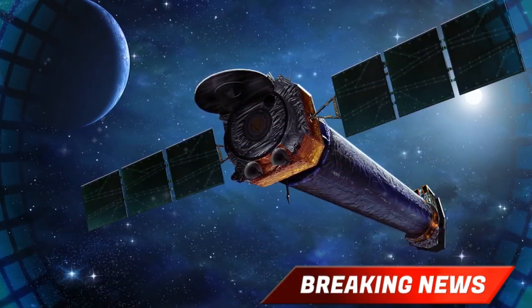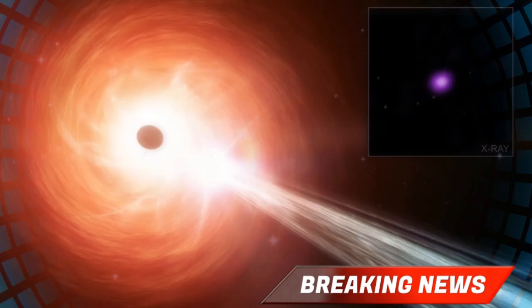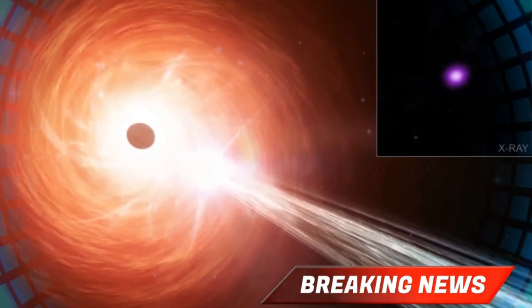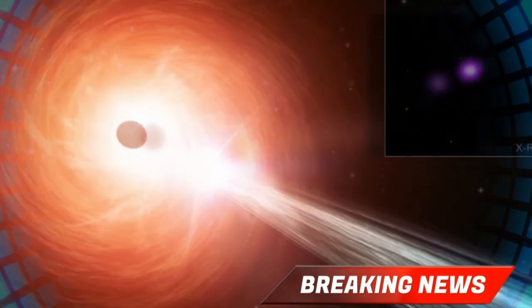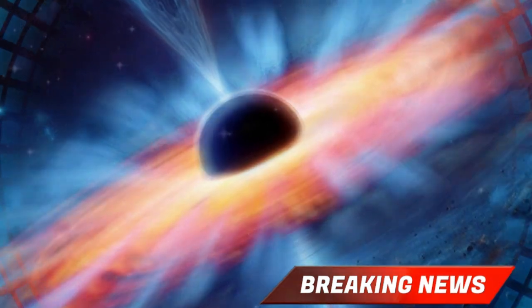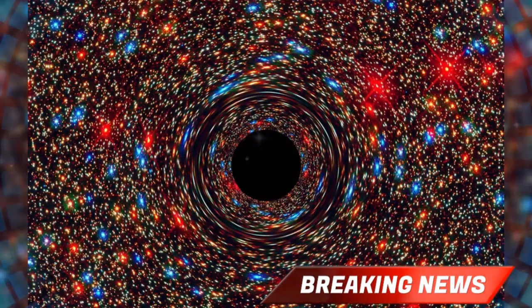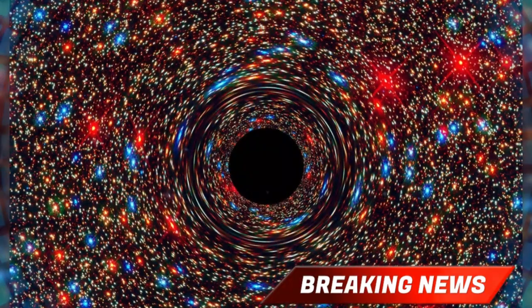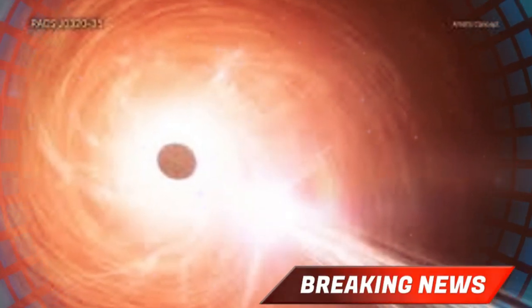But here's the real puzzle. If this black hole is defying the Eddington limit, what does that mean about our understanding of physics? One theory is that the structure of the accretion disk might allow matter to funnel in faster than expected. Another possibility is that radiation is escaping in ways we don't fully understand, perhaps through enormous jets shooting out into space like cosmic blowtorches.